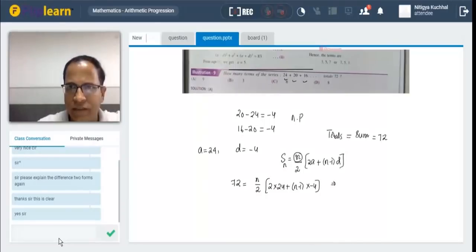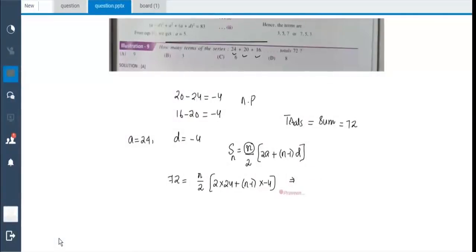As I told you, N is nothing but the number of terms. We substitute. We write 72. We take N. N needs to be found out. So N by 2, we have 2 times A. A is how much? 24 plus N minus 1 into minus 4, right. This is how we write it. Fine.